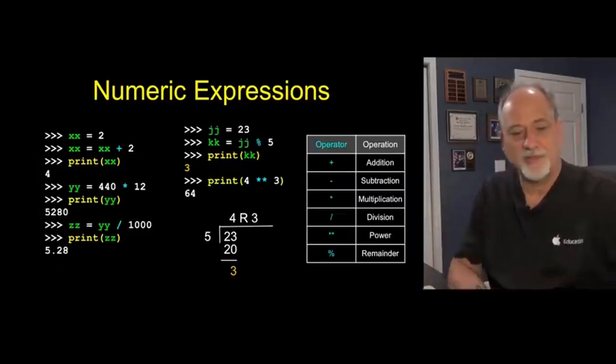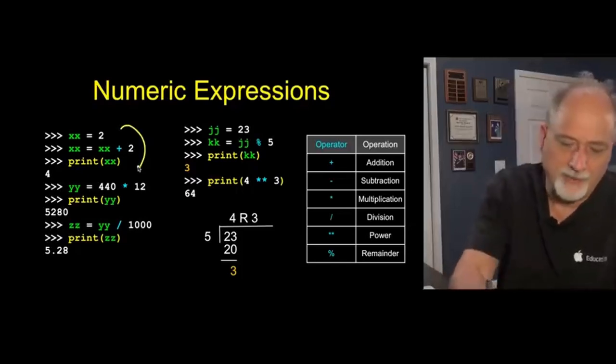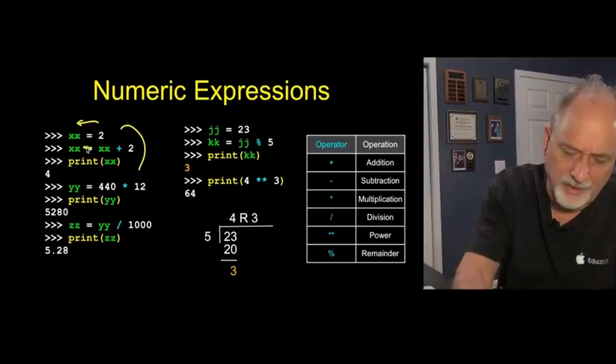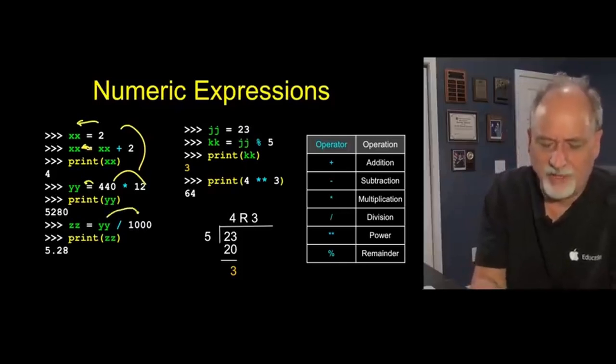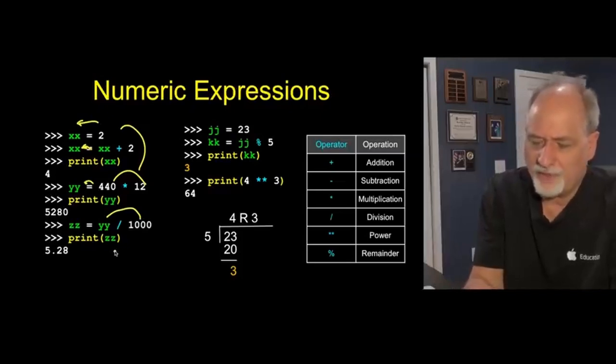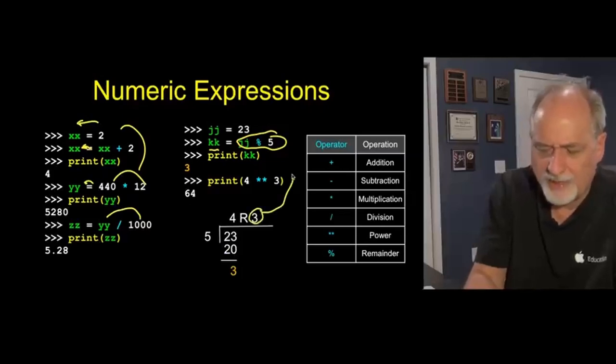So here's a whole series of little examples of this. We've already seen the plus, x equals x plus one. Keep remembering that these assignments are arrows, basically. They have a direction. Multiplication, 440 times 12. Dividing that by 1,000. Here we're gonna put 23 into jj, and then we're gonna do modulo. So that says, take 23, divide it by 5, and give me back the remainder, and put it in kk.